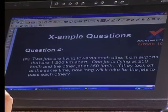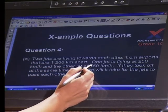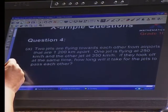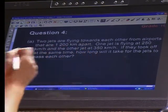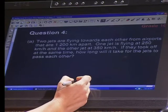So we're going to carry on with some word problems. Let's see what we've got next. Two jets are flying towards each other from airports that are 1,200 kilometers apart. The one jet is flying at 250 kilometers per hour and the other jet at 350 kilometers per hour. If they took off at the same time, how long will it take for the jets to pass each other?